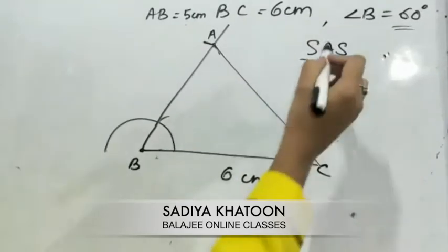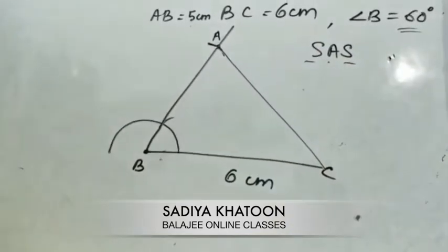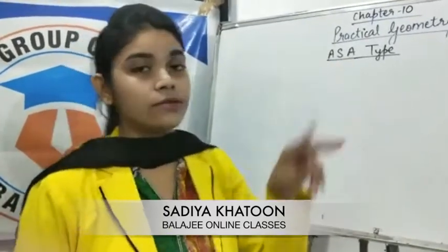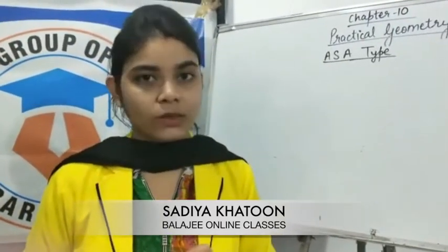When one angle and two sides are given, this is called SAS type — two sides and one angle. The next type of triangle construction is ASA type: angle, side, angle. So two angles will be given and one side will be given.